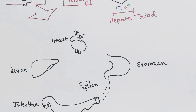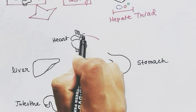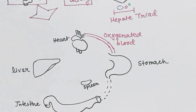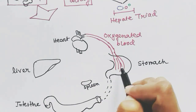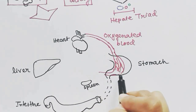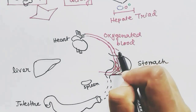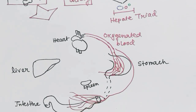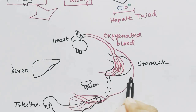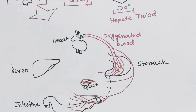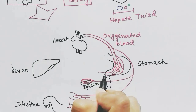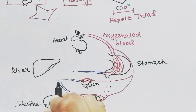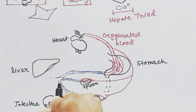A blood vessel coming from the heart with oxygenated blood will come to the organs — stomach, intestine, and spleen — to supply oxygen to these organs. After giving oxygen to these organs, the blood vessels will have less oxygen in them, and thus the blood is called deoxygenated blood.